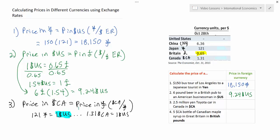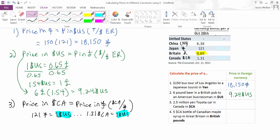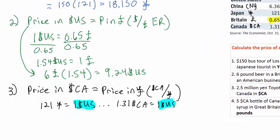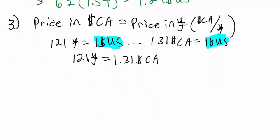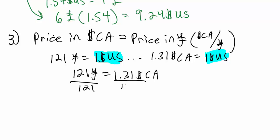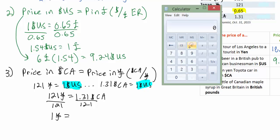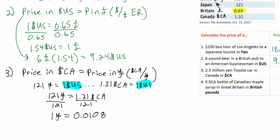We also know that 1.31 Canadian dollars equals one US dollar. Since both exchange rates equal one US dollar, they must equal each other. So we can set 121 yen equal to 1.31 Canadian dollars. To find how many Canadian dollars per yen, we divide both sides by 121: 1.31 divided by 121 gives us 0.0108 Canadian dollars per yen.